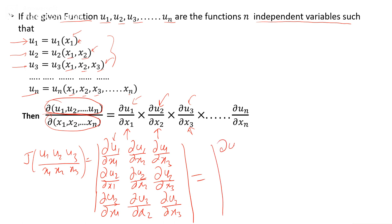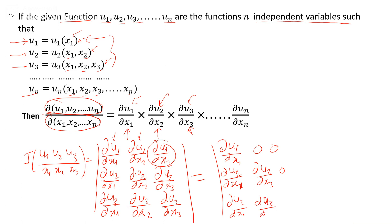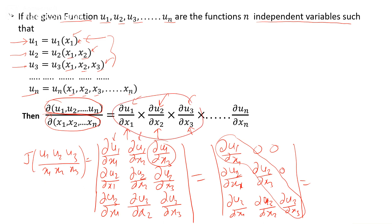Since u1 depends only on x1, its partial derivatives with respect to x2 and x3 are 0. Similarly, u2 has 0 partial derivative with respect to x3. This makes the matrix upper triangular, so expanding the determinant gives the product of the diagonal elements. You can prove this for the general n-term case. So if the functions have this cascade structure, you can write the Jacobian directly using this property.